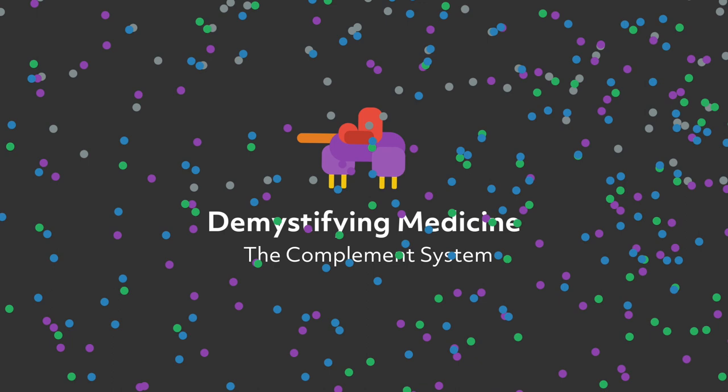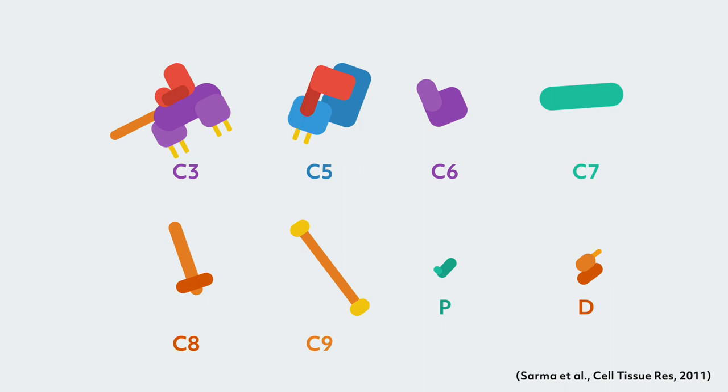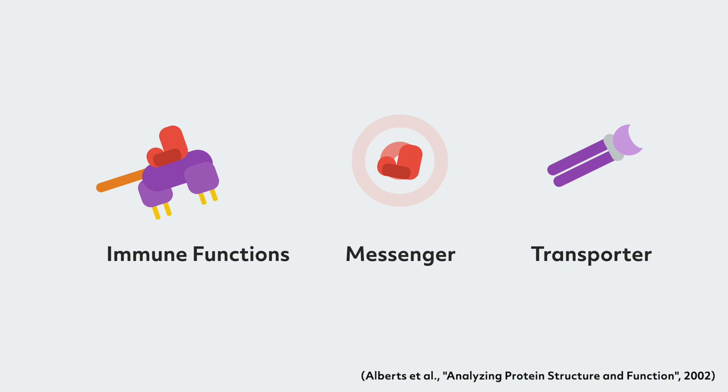What is the complement system? The complement system is essentially made up of a large group of proteins. A protein is a cluster of molecules that performs various functions to keep your body alive. Each protein has a unique shape that determines its function.